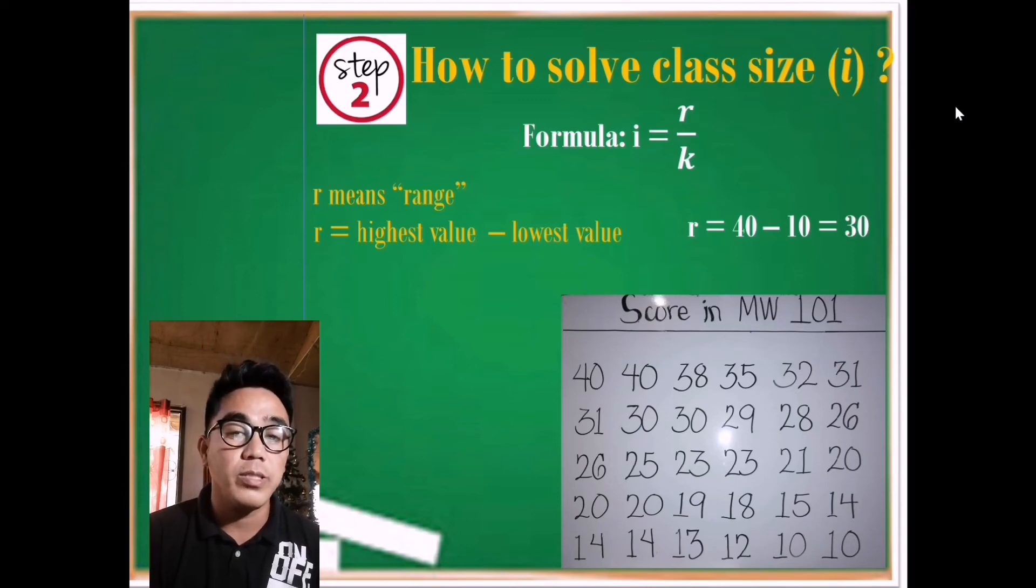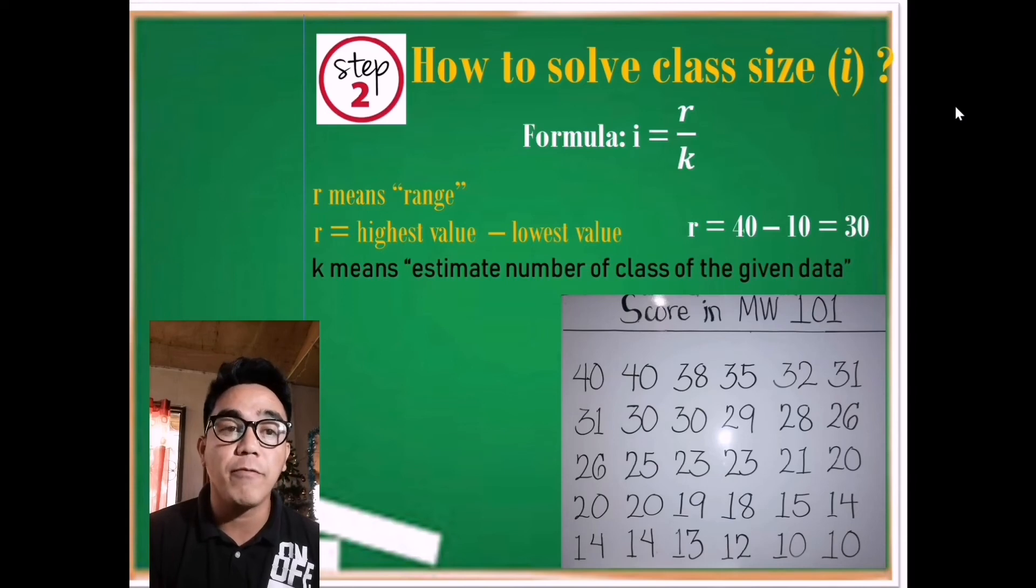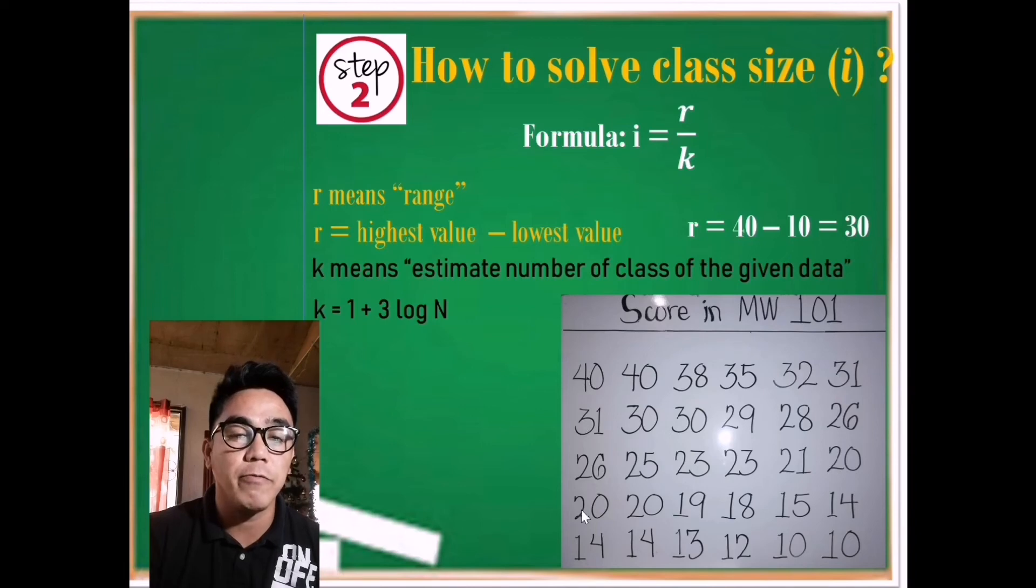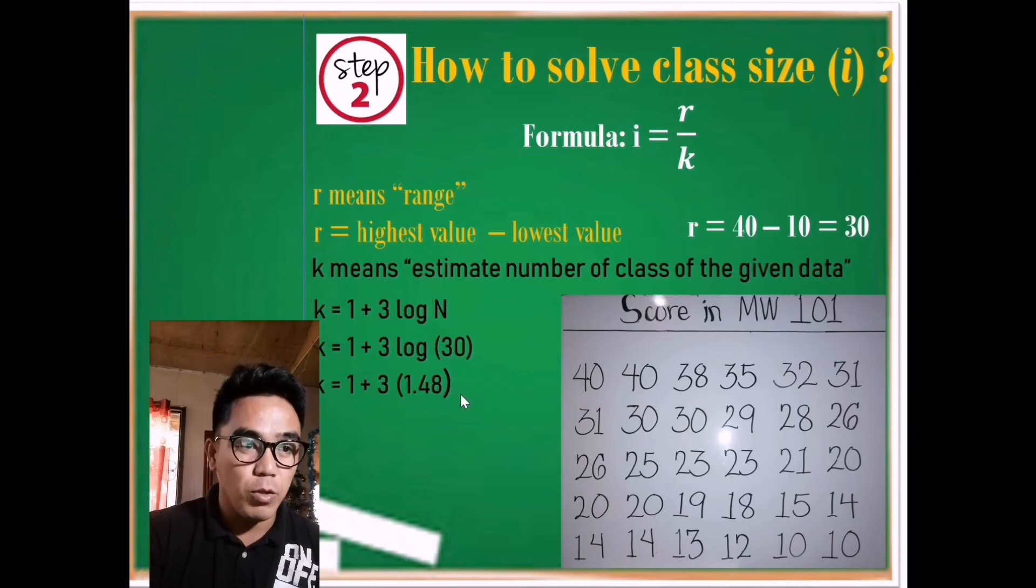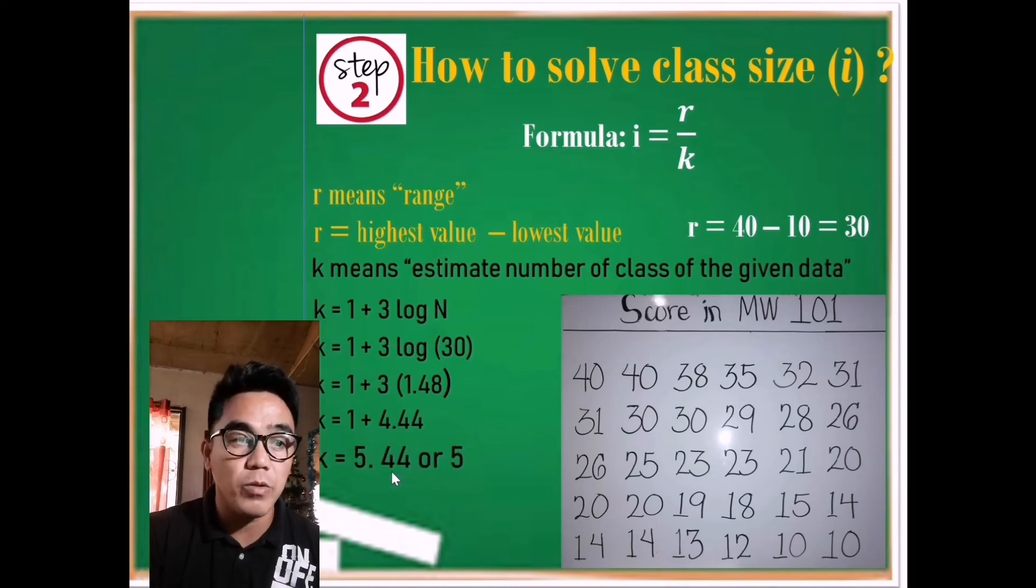Now how about k? When we say k, it is the estimated number of classes of the given data. So how are we going to solve k? Let us have the formula: k equals 1 plus 3 times logarithm or log times capital N or total number of population. So how are we going to solve the total number of population? We have 2, 4, 6, 2, 4, 5. Just multiply them: 6 times 5, that is 30. So do the substitution. We have 1 plus 3 times logarithm. The total number of population is 30. Then we're going to get the log of 30 to the nearest hundredths. So we have 1.48. Multiply them, then we have 4.44. Add, we have 5.44. Rounded off to the nearest tens, since 4 is less than 5, then we retain 5.